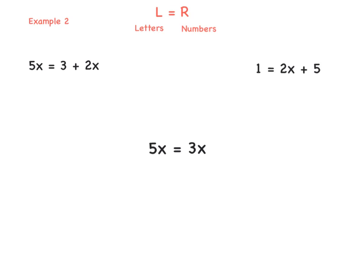Let's do a few more questions. We know our rules: left side equals right side. And we have another rule: letters on the left and numbers on the right. So when we have 5x equals 3 plus 2x, we have letters here and there, with numbers mixed in. We need to follow the rule — letters on the left, numbers on the right. So in this case we need to get rid of 2x. We only want letters on the left side and numbers on the right, so first of all get rid of 2x. This is positive 2x, so we need to minus 2x to get zero.